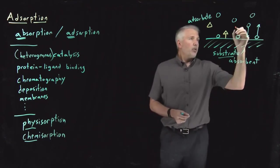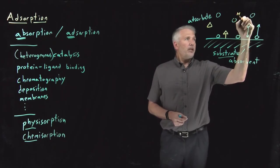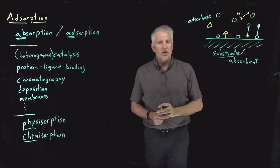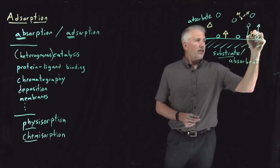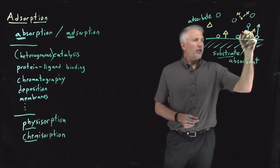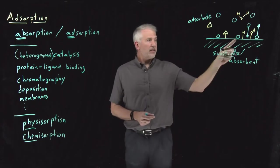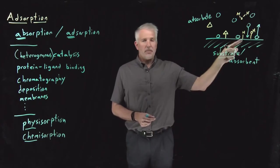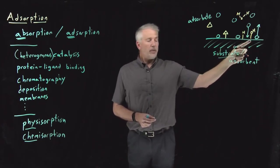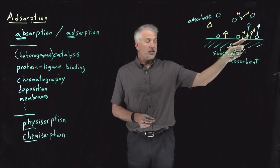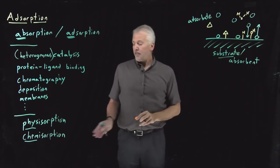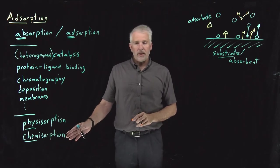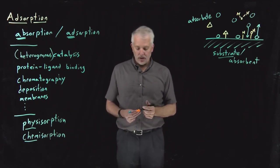An even more drastic case of chemisorption would be if I have a molecule like water that, when it binds to the surface, chemically dissociates and binds as a hydrogen binding at one site and an OH binding at another site. That's again a chemical change that takes place on the surface, and that can drastically change the way that we think about the adsorption. So that would also be a case of chemisorption.